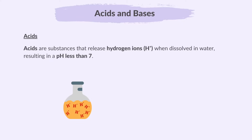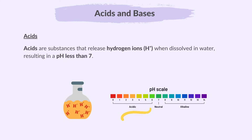Acids are substances that release hydrogen ions when dissolved in water, resulting in a pH less than 7. It is these hydrogen ions that make the solution acidic. pH is a number that shows how acidic or basic a solution is. A pH of 7 is neutral, below 7 is acidic, and above 7 is basic.